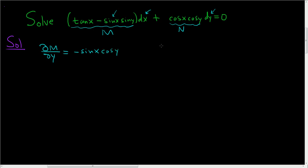Now we have to compute del N del X, and again, there's a Y here, so you just put an X here. So the derivative of cosine is negative sine, and we treat the cosine Y as a constant, so this is cosine Y. And so these are equal, so our DE is actually exact.